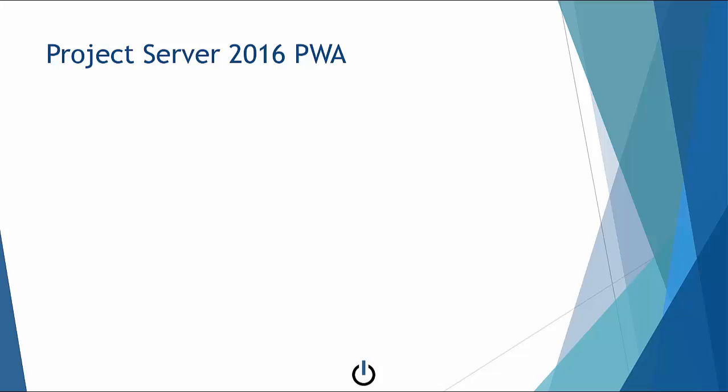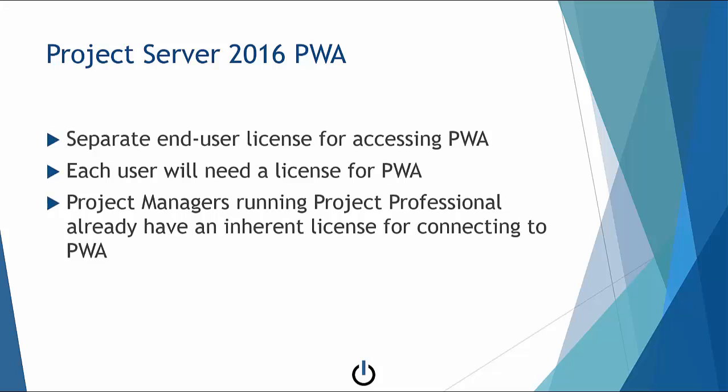With regards to licensing, Project Server PWA CALs, or Client Access Licenses, similar to Project Online Essentials as described earlier, is the end-user or team member version of the PWA license. Each user who accesses PWA will need a PWA CAL. Incidentally, project managers using Project Professional will already have this license.